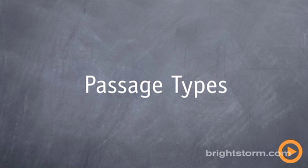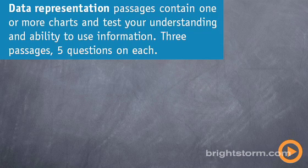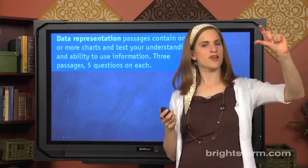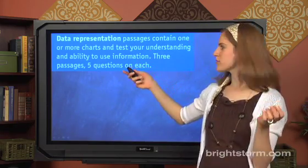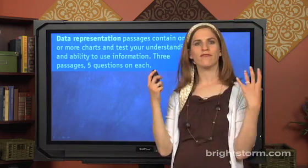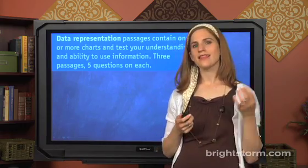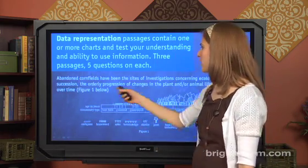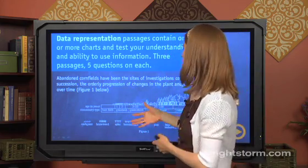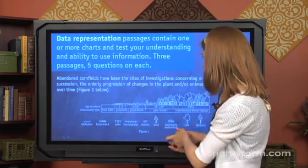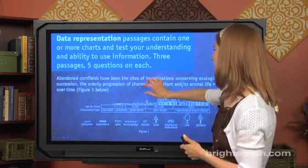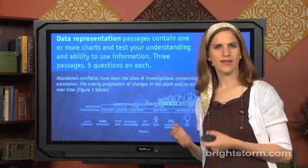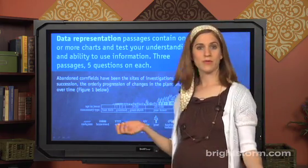The first passage type is data representation passages. These contain one or more charts or graphs and test your understanding and ability to use the information. There'll usually be a few sentences describing what you're going to see in the chart or graph, and then one or two charts or graphs. There are three of this type with five questions on each, for a total of fifteen questions linked to data representation passages. We've got a big diagram here, and there'll be five questions attached, with a little blurb on top giving it some context.